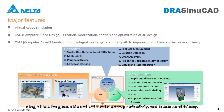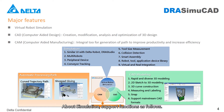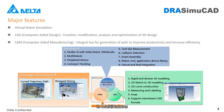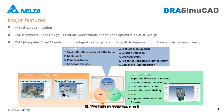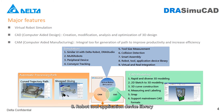Computer aided manufacturing integrates path generation to improve productivity and increase efficiency. Simulation support functions include: First, similar user interface with Delta robot DI Studio. Second, multi-robots. Third, peripheral device. Fourth, conveyor tracking. Fifth, tool size measurement. Sixth, collision detection. Seventh, smart assembly. Eighth, robot tool application device library. Ninth, virtual and real integration.